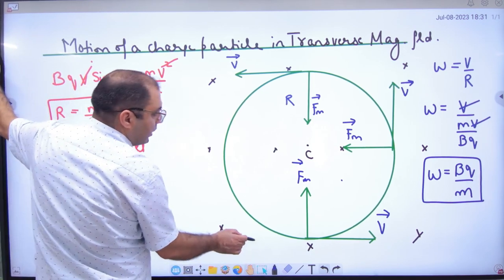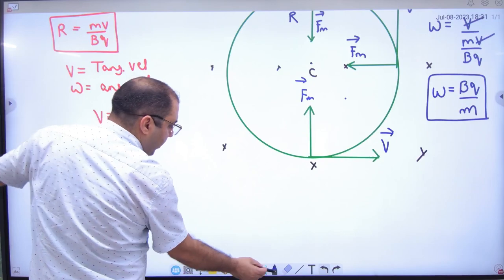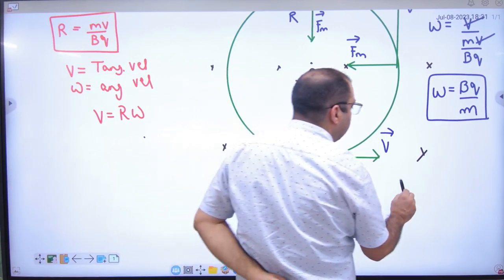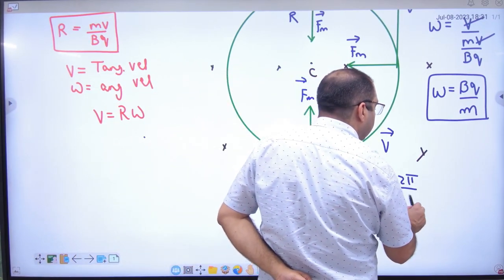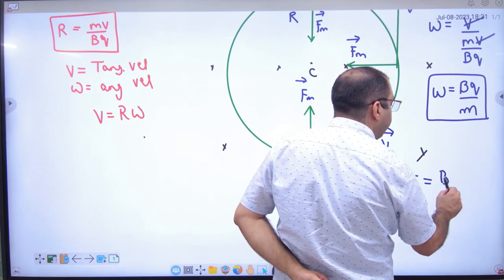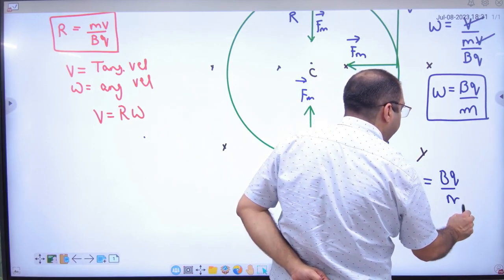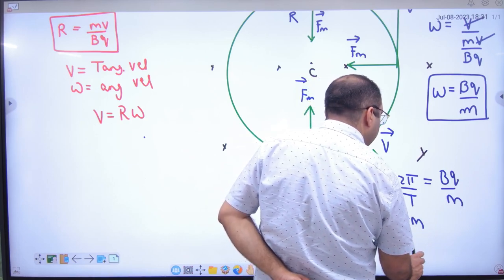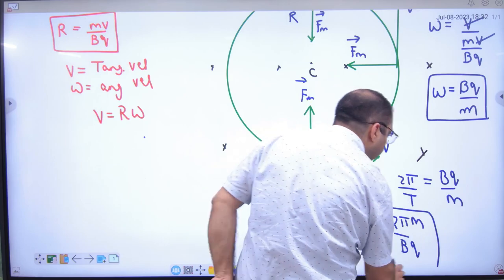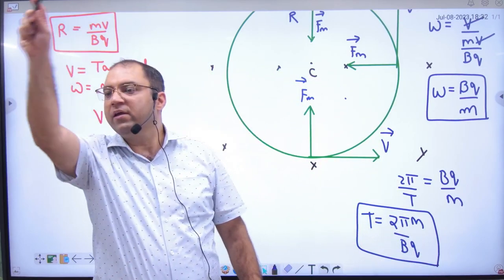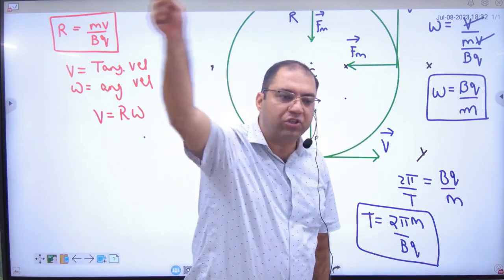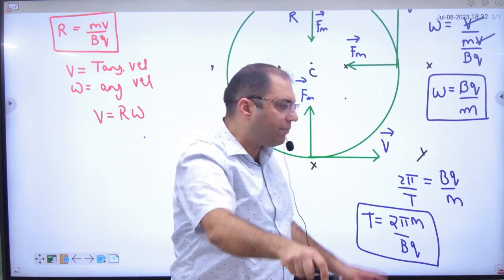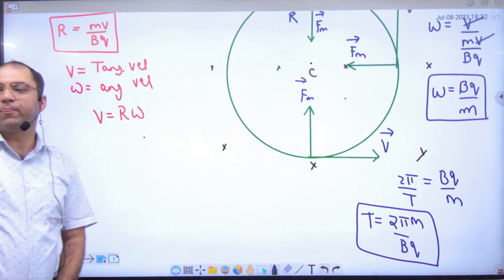Third, the other formula. What is omega? 2π divided by T is equal to what? BQ divided by M. Time period is equal to... So the formula is 2πM divided by BQ. Next formula note, time period means in a circle the particle moves, how much time it will take, capital T. So capital T formula note please.